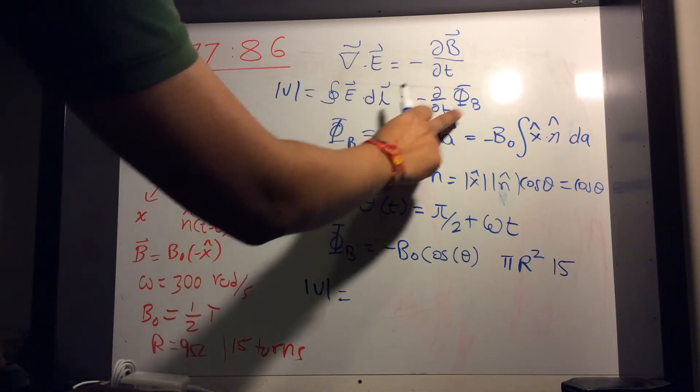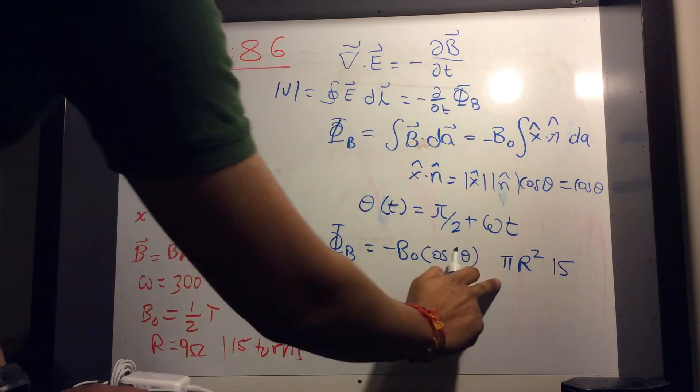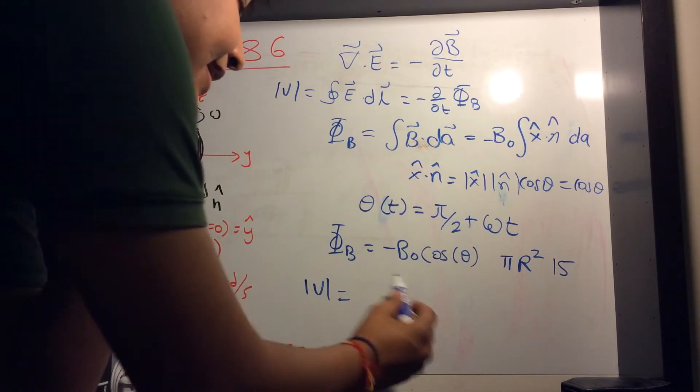But let's just deal with the time derivative of phi. So voltage is equal to d phi dt. So let's take derivative of that. And we get...